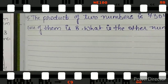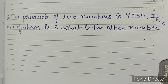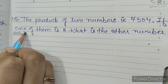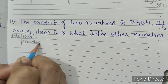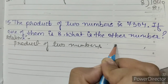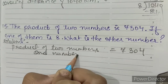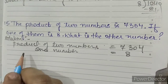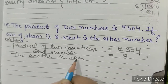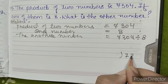Question number 15. The product of two numbers is 7304. If one of them is 8, what is the other number? Solution. Product of two numbers equals 7304. One number equals 8. The other number equals 7304 divided by 8.